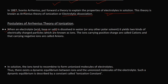— is dissolved in water or any other polar solvent, it yields two kinds of electrically charged particles which are known as ions. So if we consider an electrolyte AB and put it in water or any other polar solvent, it will break and give A⁺ plus B⁻.